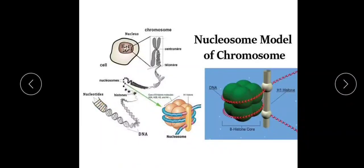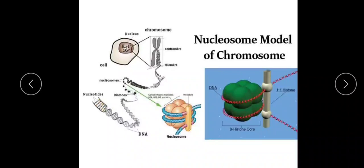The amino acid sequences of these histone proteins are highly conserved among organisms, because in every organism DNA is negatively charged, so there is not much difference in the histone protein sequences. This nucleosome model was proposed by Roger Kornberg, and nucleosomes are the fundamental repeating units of chromatin.